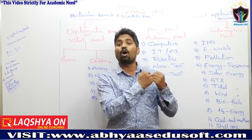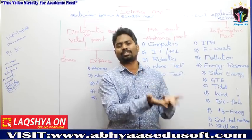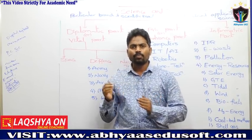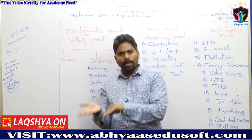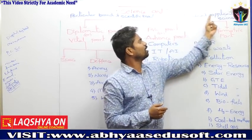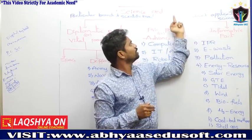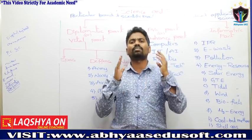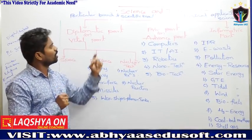Science means a particular branch of scientific knowledge. If we apply the application of science, it is called technology — the practical application of science in industry as well as commerce is known as technology. To understand our syllabus of science and technology, we can classify it into three parts.